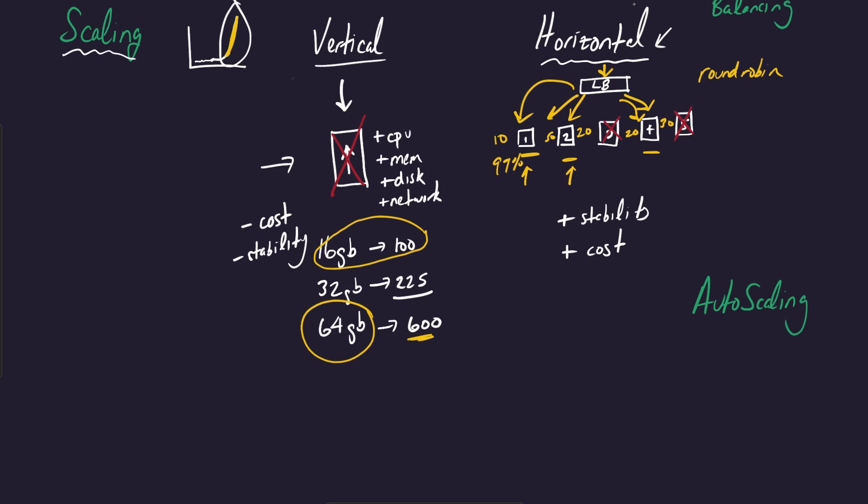So we saw with this horizontally scaled example, you have multiple different machines here, just going to redraw this really briefly. Say you initially set this to be three different machines that you want to provision for your application.